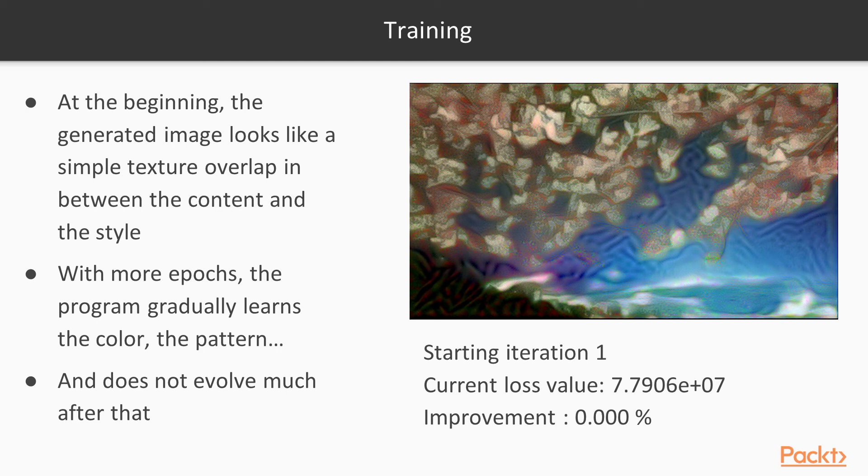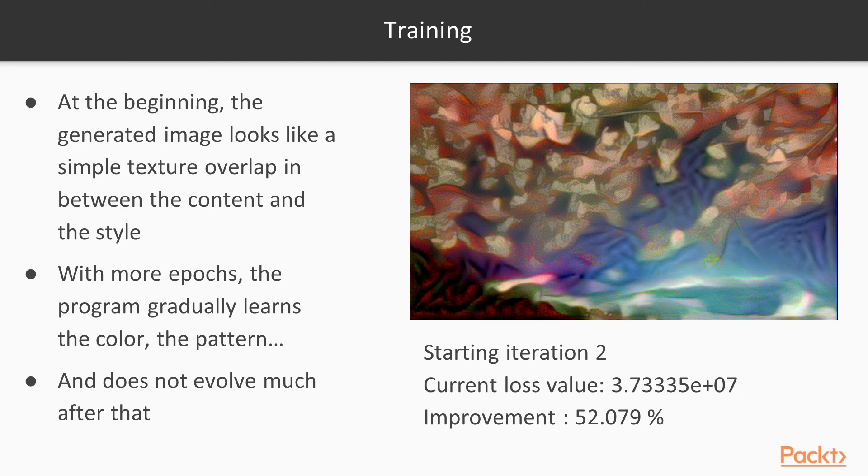So this is, like I said, it's a content loss plus a style loss. Then of course we have zero improvement because we've just started. Then with iteration number two we have an improvement of 52%, we're decreasing the loss with the gradient descent algorithm.